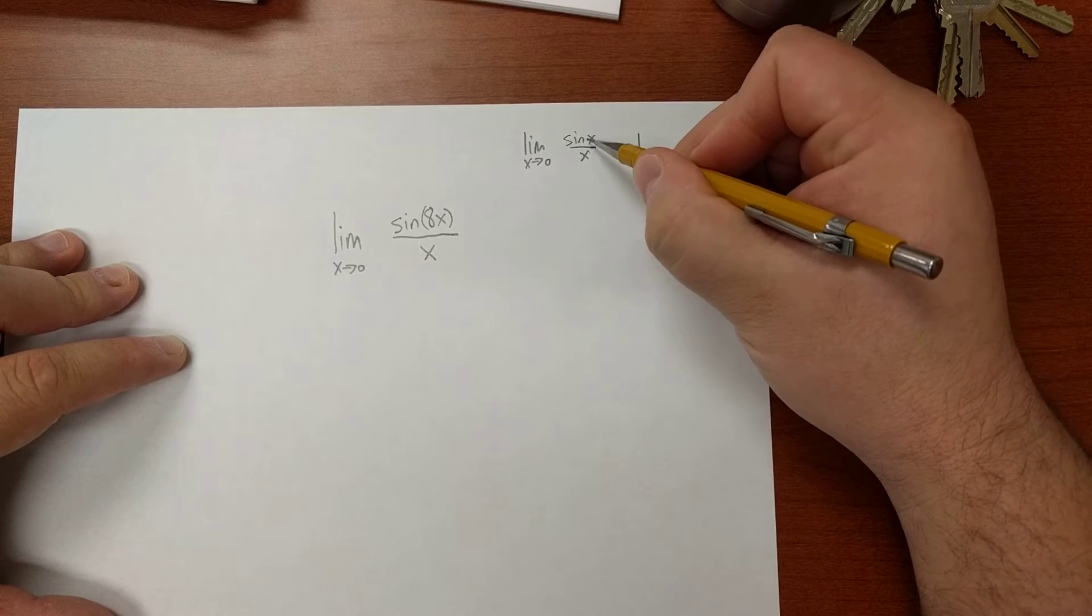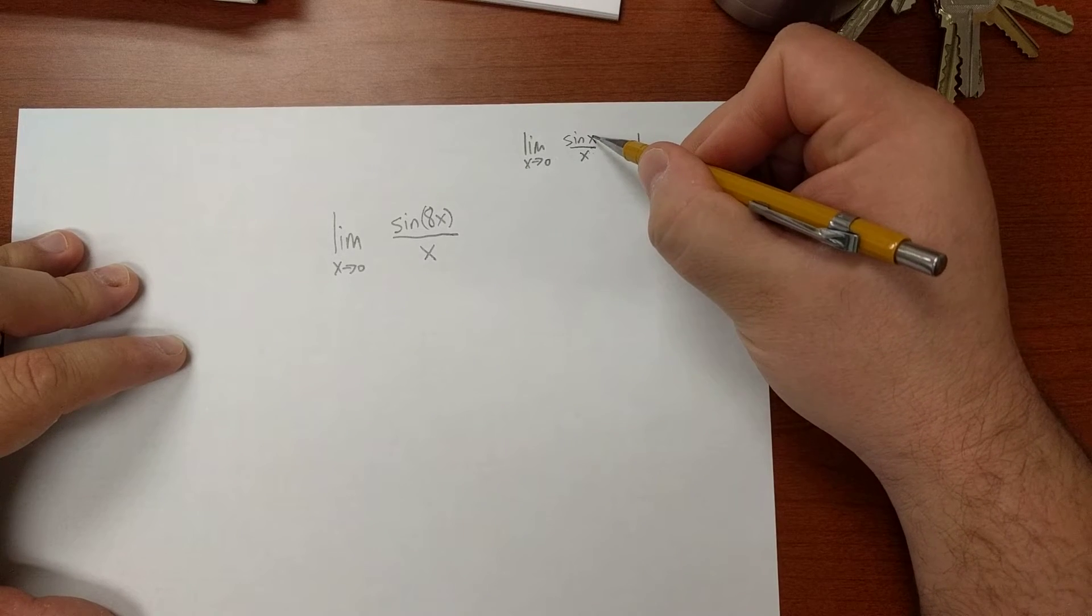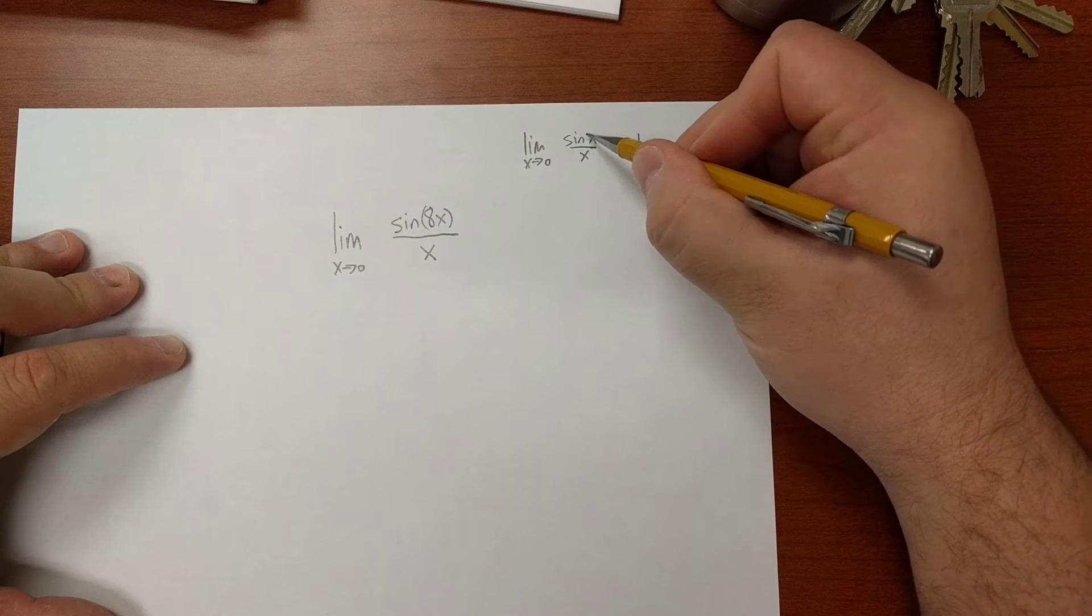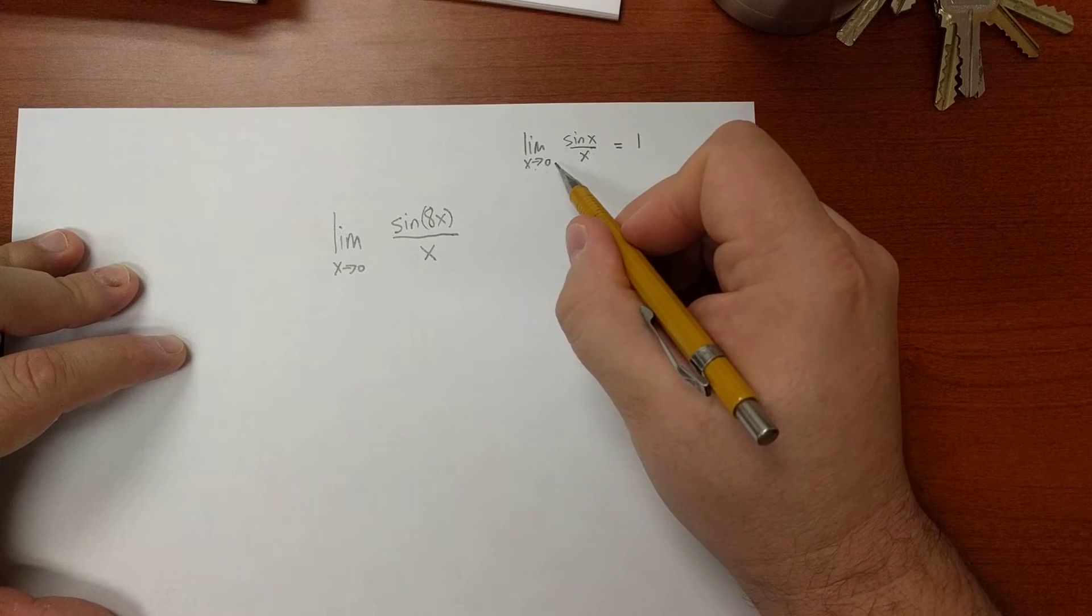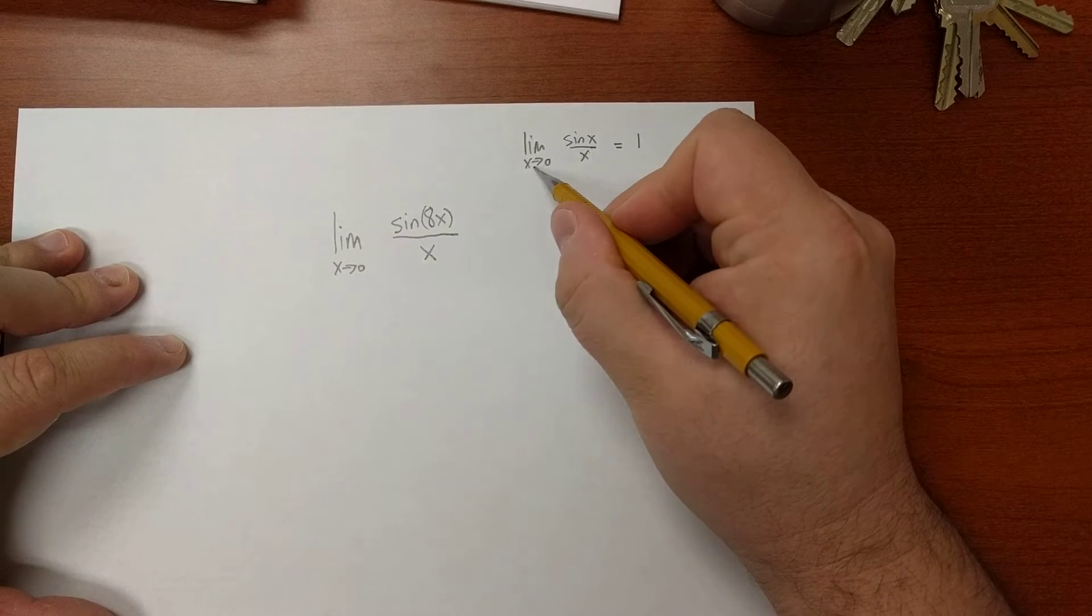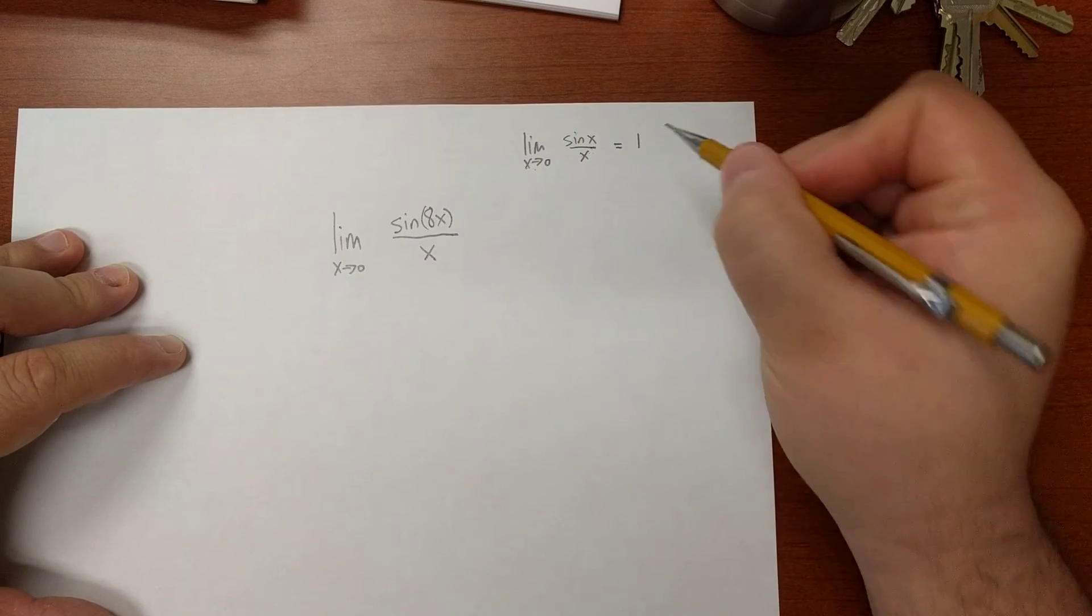there. As long as we have the same variable with the same coefficient in the argument of the sine function and on the denominator, and the limit is approaching 0, the limit will be 1.